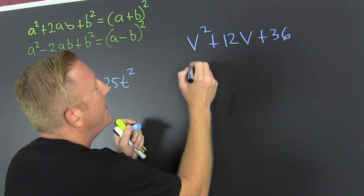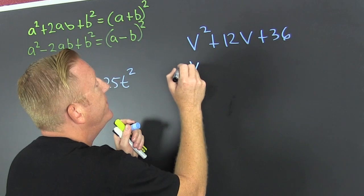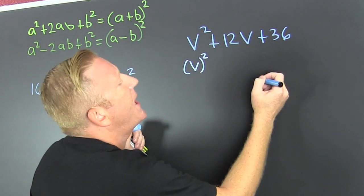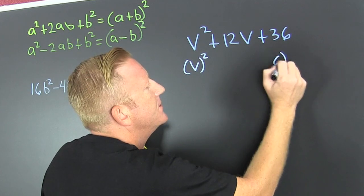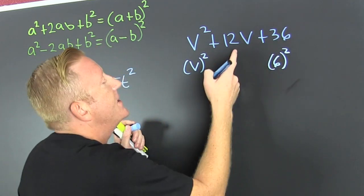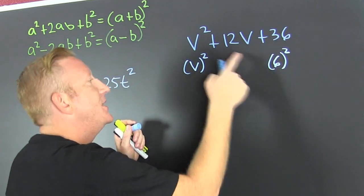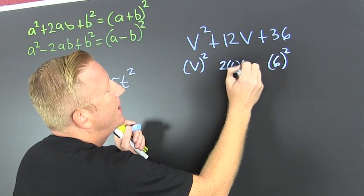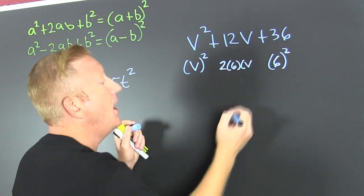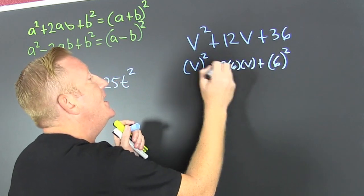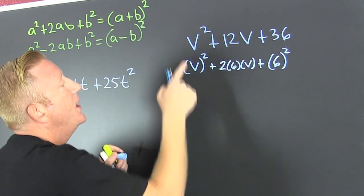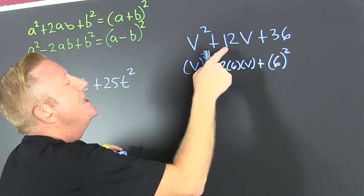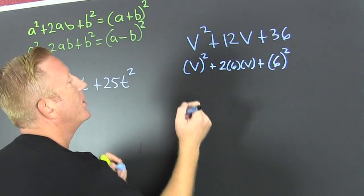What do I have? I have my a is going to be v. And is that something squared? Yeah, sure. That's 6 squared. And I take this one times that one and double it. Is it 12? Is it 2 times 6 times v? I do see that it is of the form. So I take this one times this one times that one, double it. Is it? It's a perfect square.